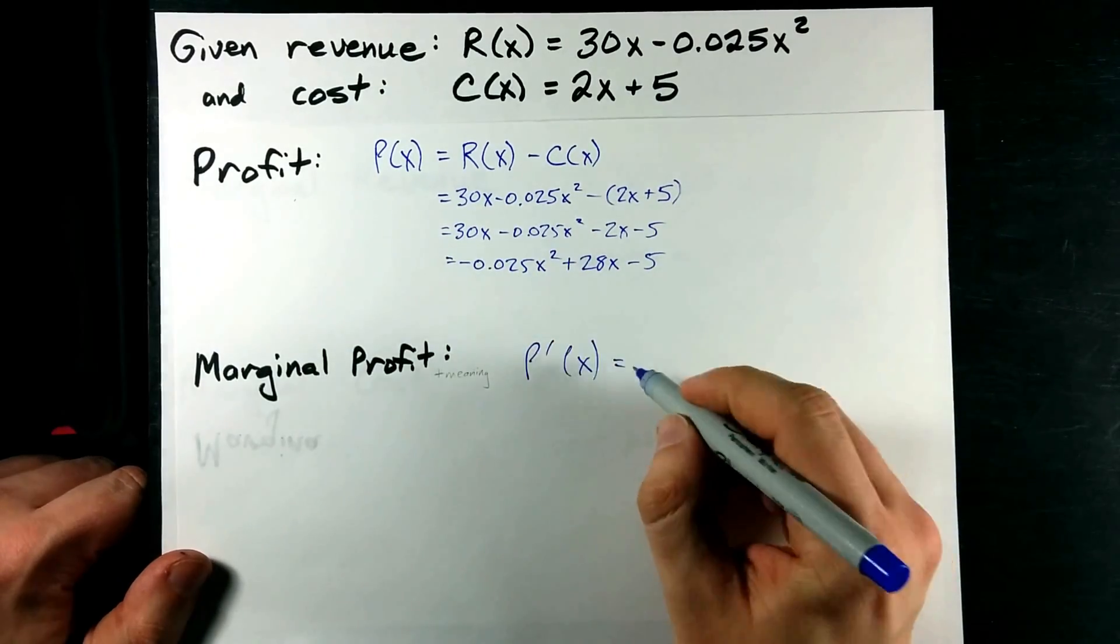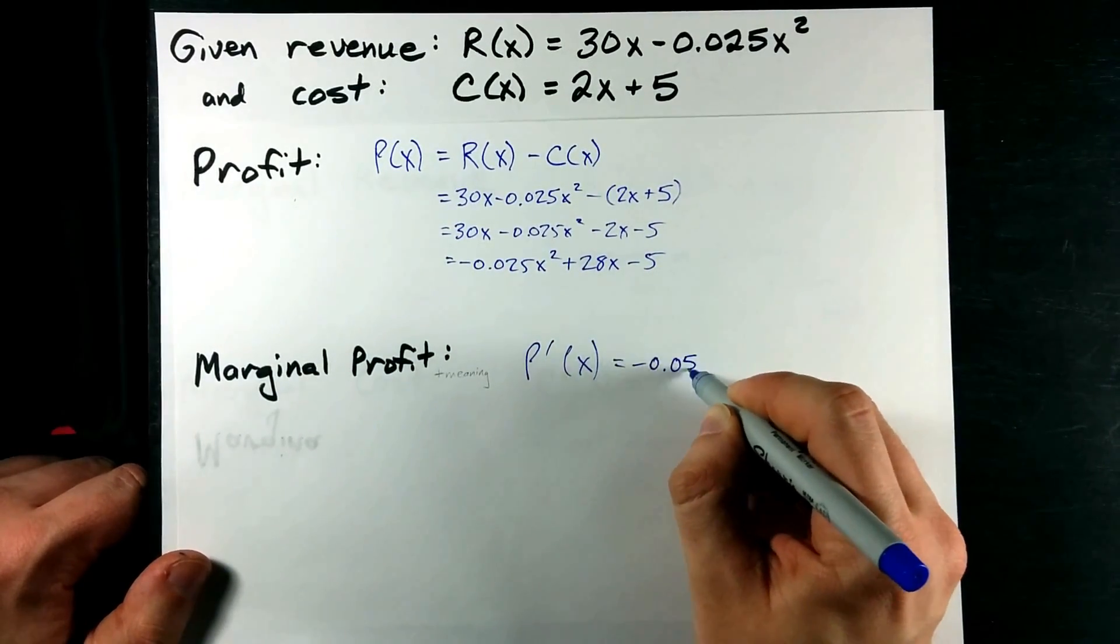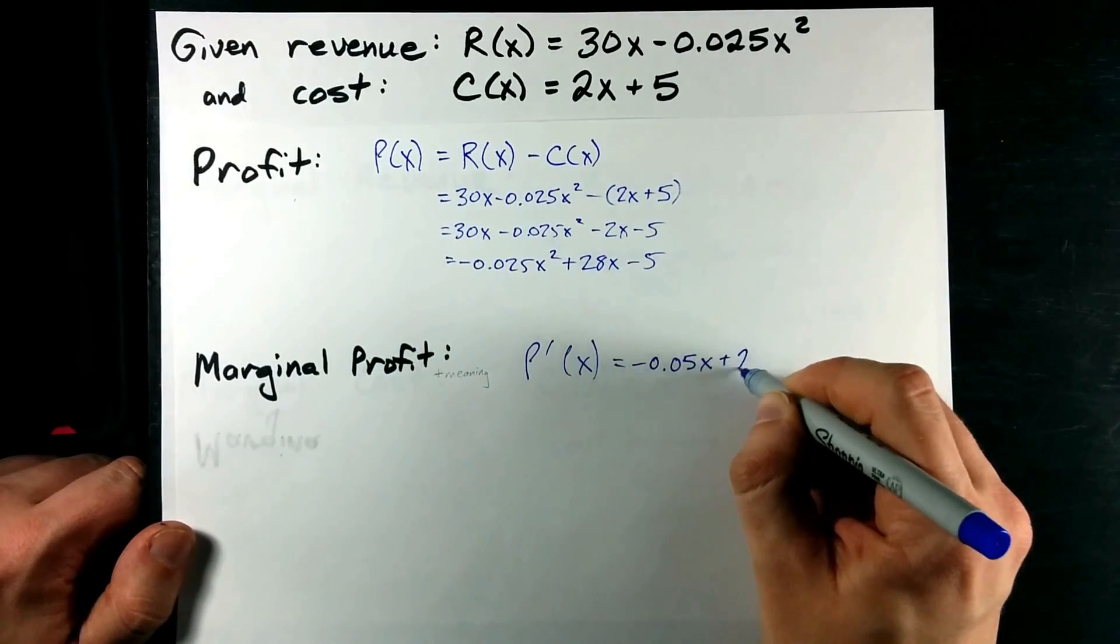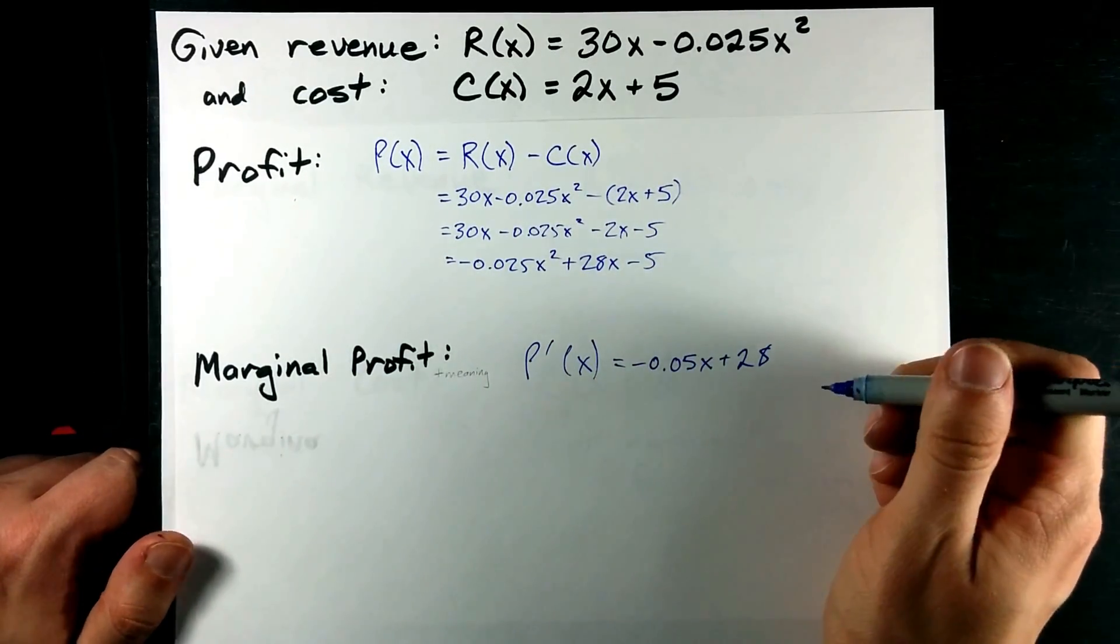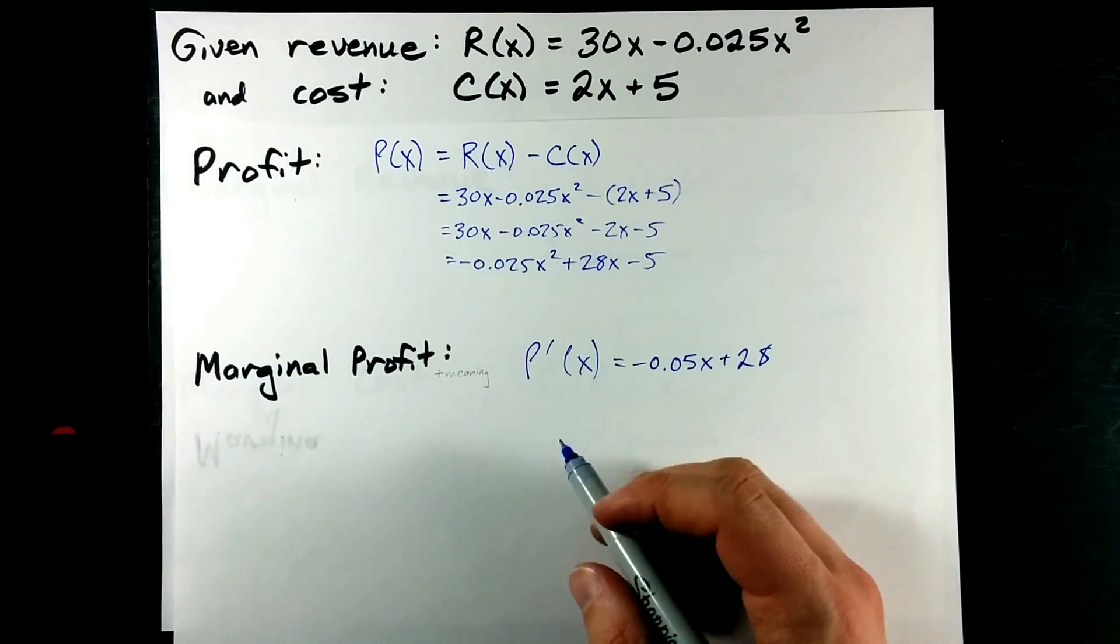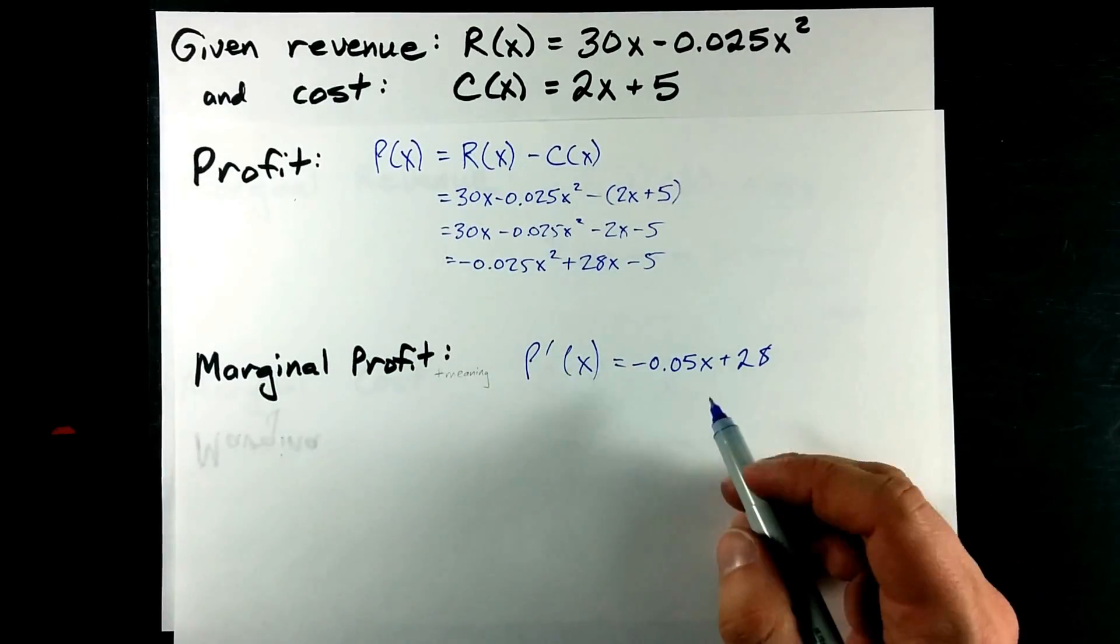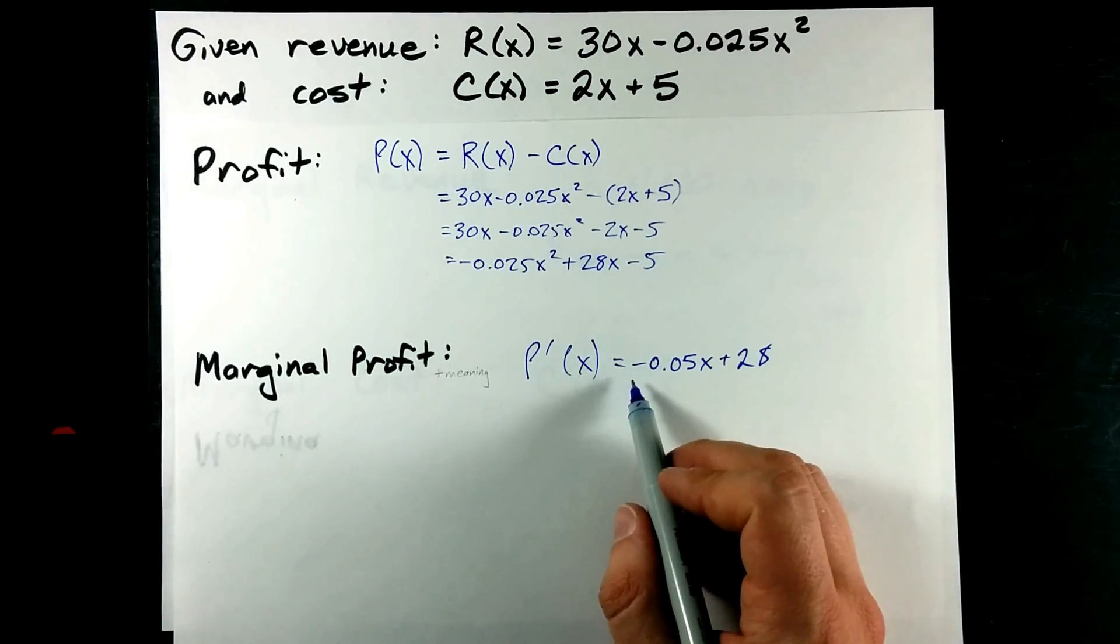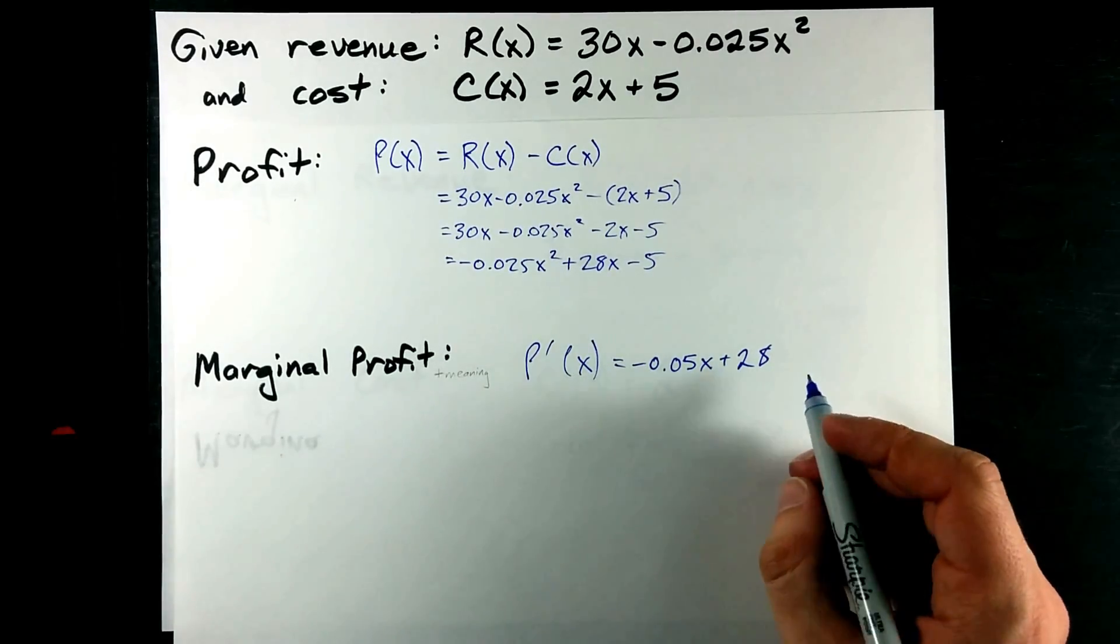Bring the 2 down. That's negative 0.05x. And the derivative of plus 28x is plus 28. So, for every one extra unit that I make after making x units, this is how much more money I will make.